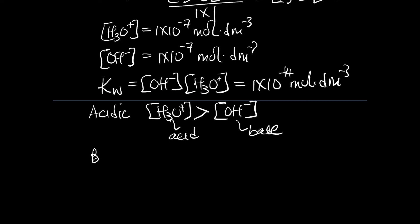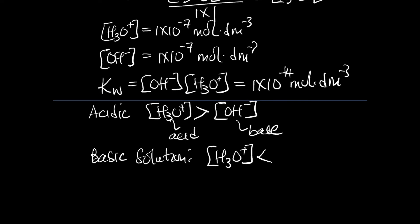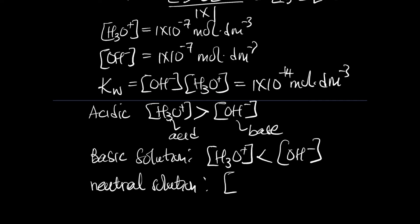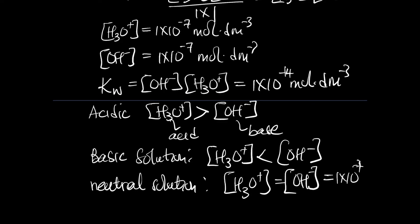If we have a basic solution, that means the concentration of hydronium ion is less than the concentration of hydroxide ion. For a neutral solution, the concentration of hydronium ion is equal to the concentration of hydroxide ion, and we know both values are 1×10⁻⁷ mol per dm³.